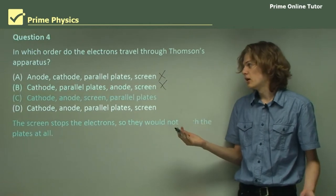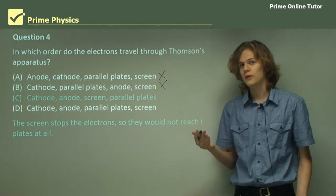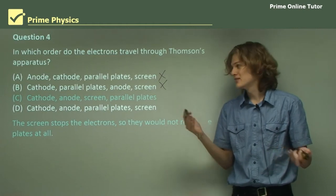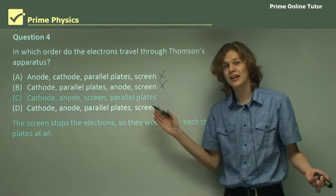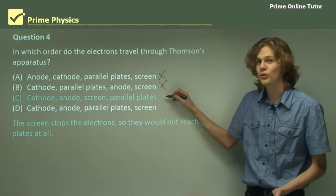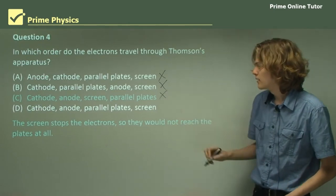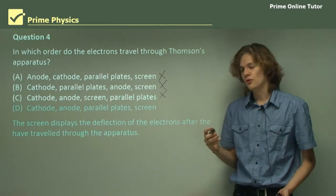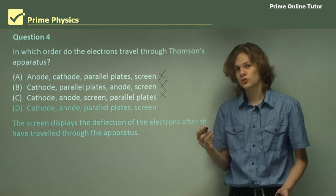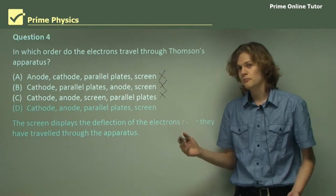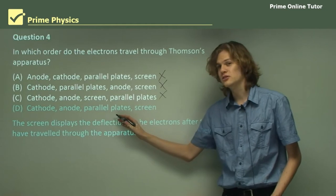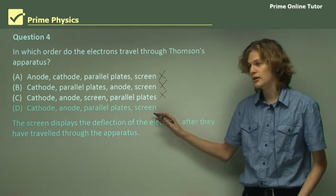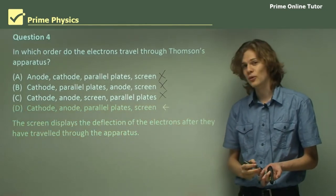Option C: cathode, anode, screen, parallel plates. The problem here is, as soon as the electron hits the screen, it stops moving, so it'd never be able to get to the parallel plates. So this can't be the right answer either. And finally, D: cathode, anode, parallel plates, screen. This is the right answer, because the electron beam has to pass through the parallel plates and be deflected before it hits the screen. So D is the correct answer.